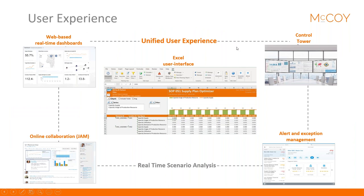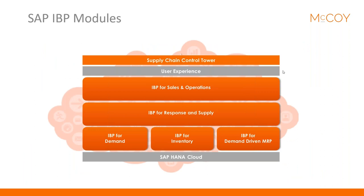The user experience is really user-friendly: you have an Excel user interface, web-based real-time dashboards, an online collaboration tool called JAM, a control tower to monitor your supply chain end-to-end, and alert and exception management — all in real-time. SAP IBP has six main modules: IBP for sales and operations, IBP for response and supply, IBP for demand, IBP for inventory, IBP for demand-driven MRP, and supply chain control tower.